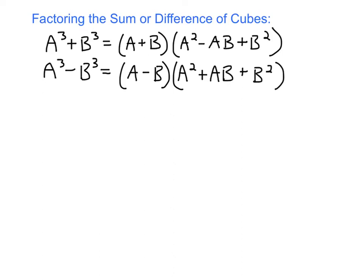A helpful memory trick: whatever sign is in your original problem — plus or minus — that same sign goes in the first set of parentheses. Then the middle term of the trinomial gets the opposite sign. The first and last terms of the trinomial are always positive, so only the middle term changes sign.